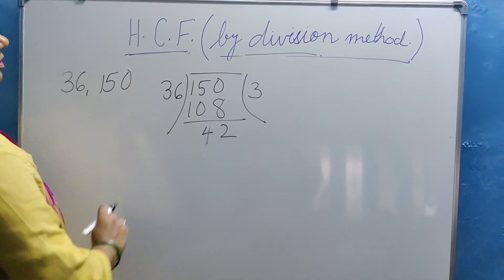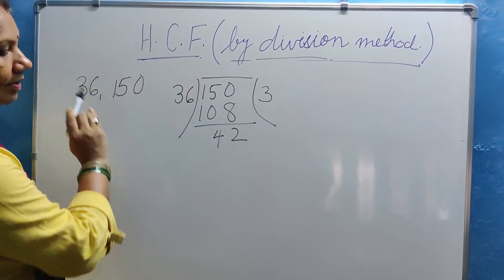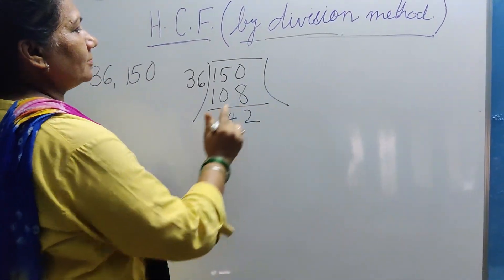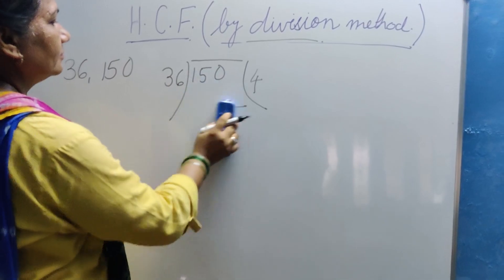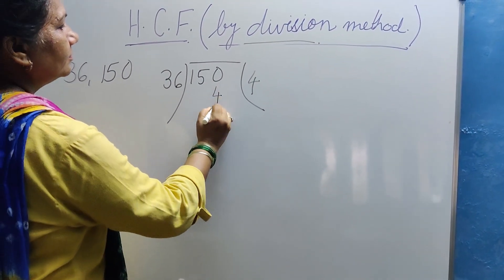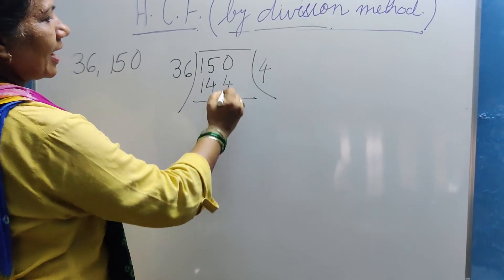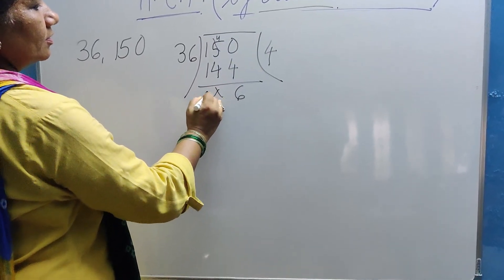To 42? No, it cannot go because remainder can never be greater than the divisor. So it will go how many times? Four times. So let us see. 4 sixes are 24, 2 in hand, 12 plus 2, 14. When you subtract 10 minus 4, 6. This becomes 4.